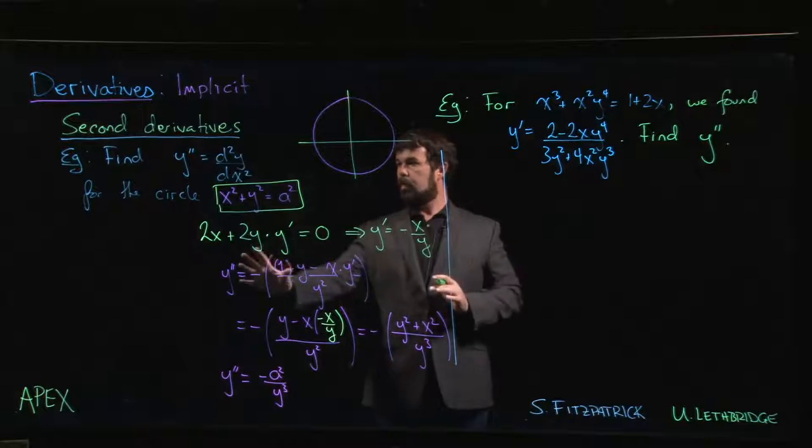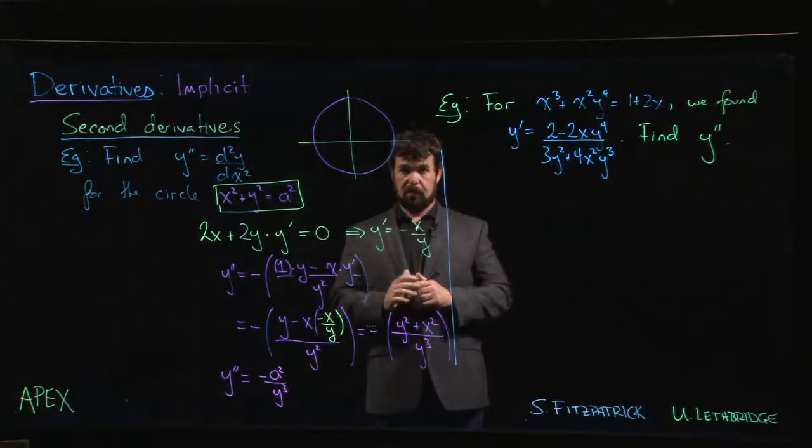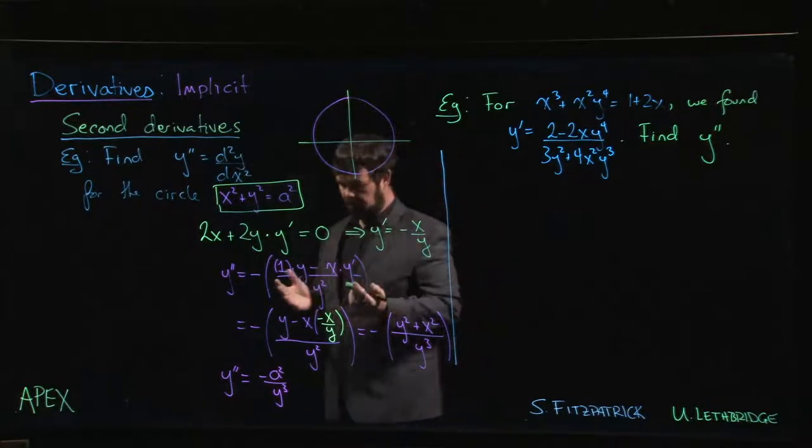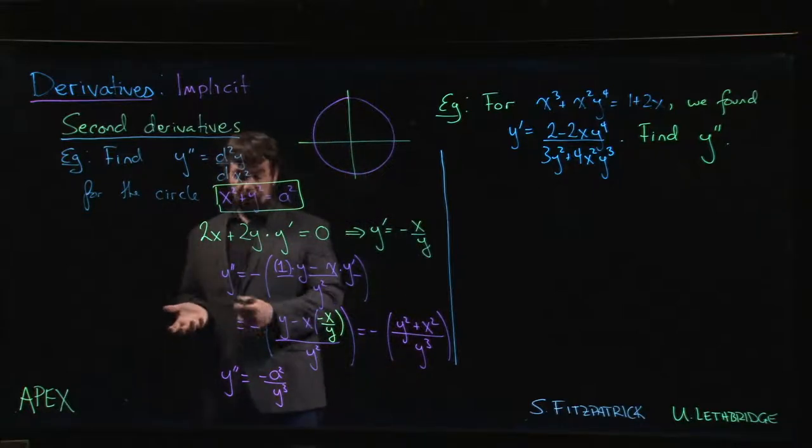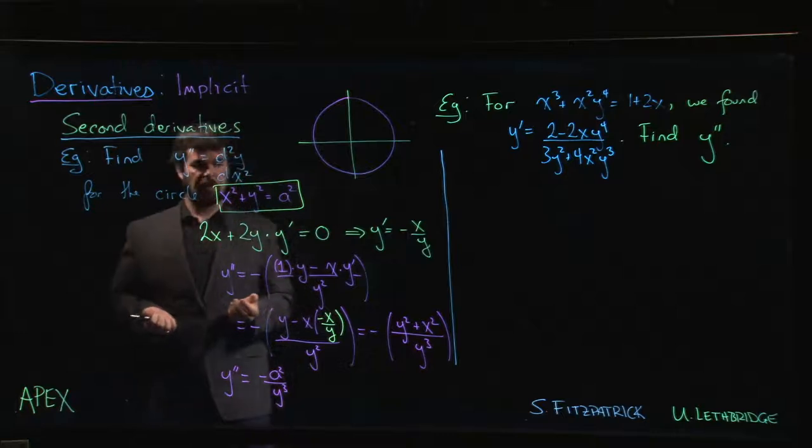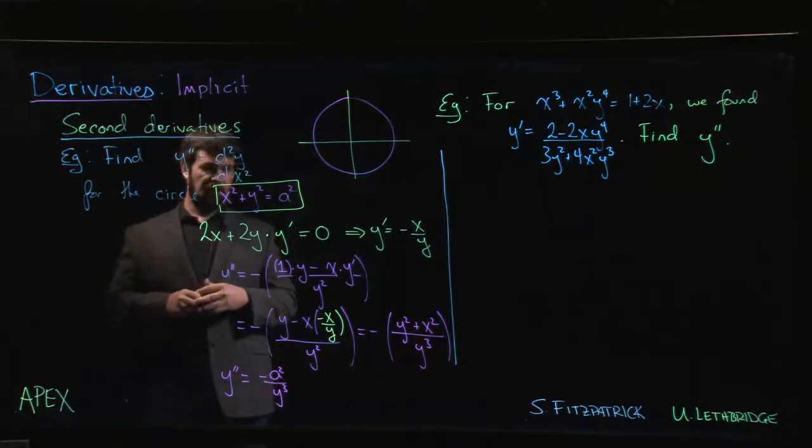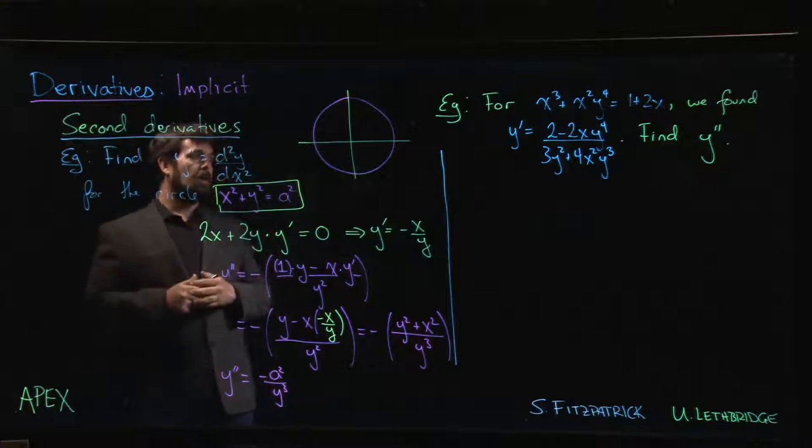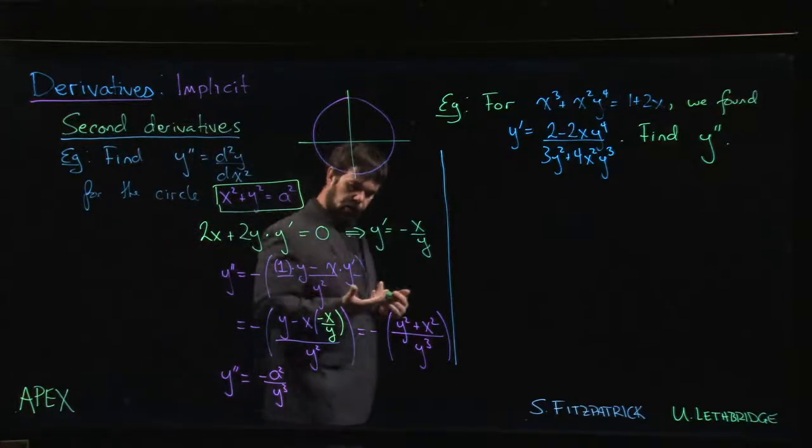In the last example, we saw how to compute the second derivative in terms of x and y. In fact, it ended up only depending on y, which is a little bit interesting. But we computed the second derivative using implicit differentiation for the case of a circle centered at the origin.